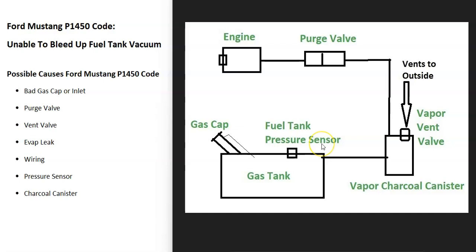Depending on the year of the Mustang, there can be some differences in exactly what's going on inside the EVAP system, so it's always a good idea to get a diagram for your specific year. The basics are that gas vapors leave the gas tank, go through a hose over to what's called a charcoal canister, which acts as storage for those gas vapors.